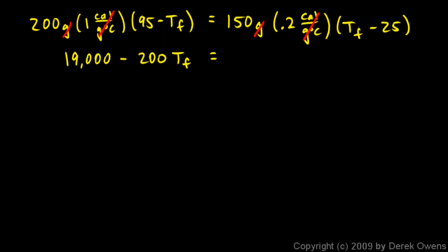On the right side I distribute also. 150 times 0.2 is 30, so that's 30 times Tf minus 30 times 25. This equals 30 Tf minus 750.